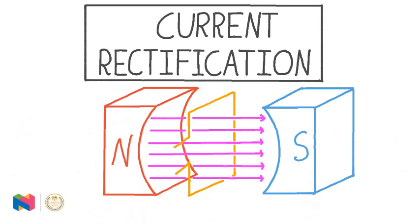An alternating current generator produces current that switches periodically between two different directions. In this lesson, we are going to learn about a mechanical device called a commutator. When an AC generator is connected to a circuit through a commutator, the commutator rectifies the current so that it always has the same direction in the circuit even as the current changes direction in the generator.